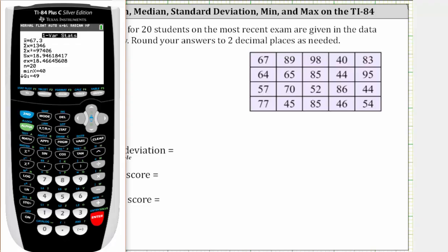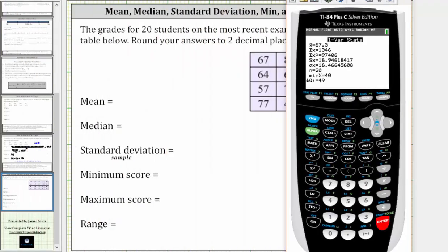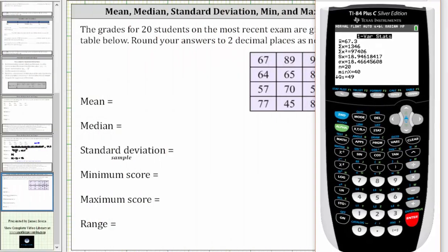Let me go ahead and move the calculator over to the right side. X-bar is the mean, so the mean is 67.3. Going down to the fourth and fifth rows, Sx is the sample standard deviation, and σx is the population standard deviation. Let's assume this is a sample of tests, and therefore the sample standard deviation is 18.95.